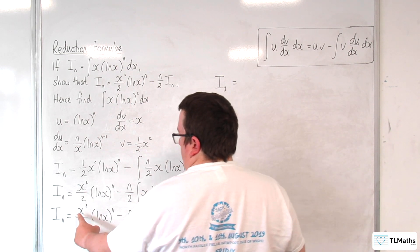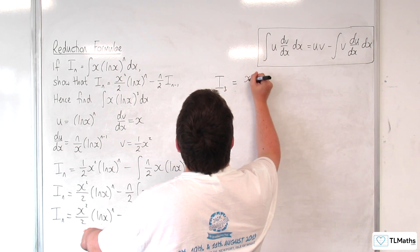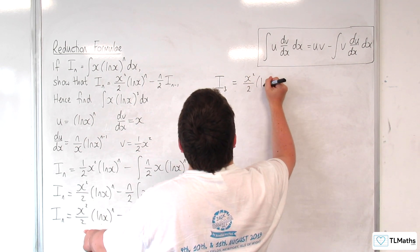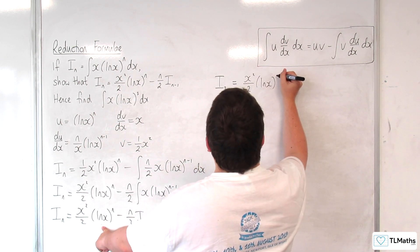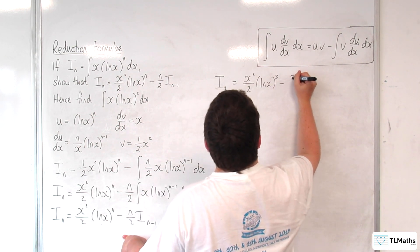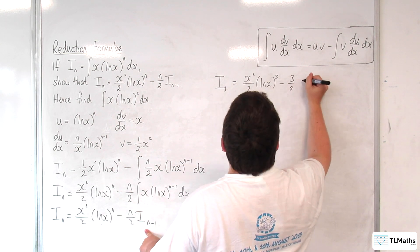So substituting 3 into this, we're going to get x squared over 2 log of x cubed, take away 3 over 2, i_2.